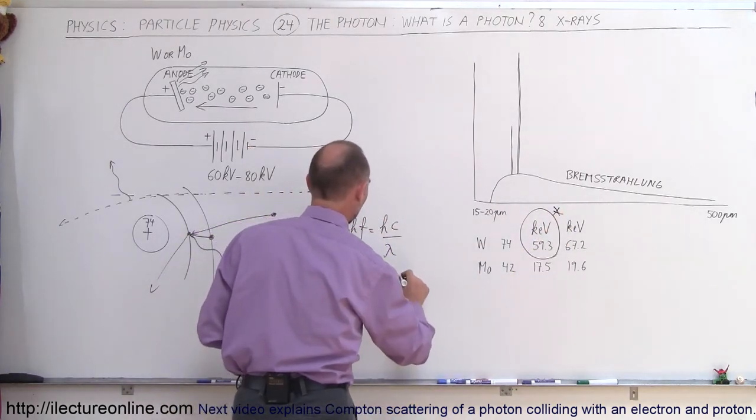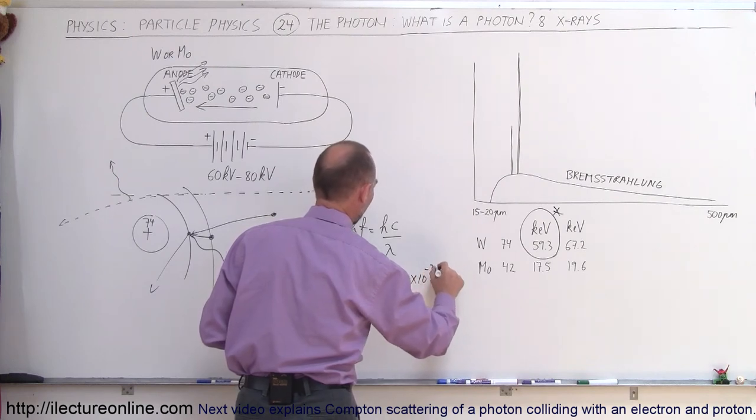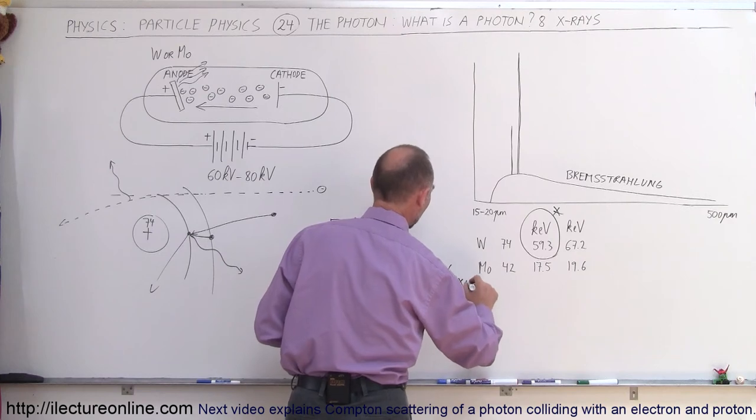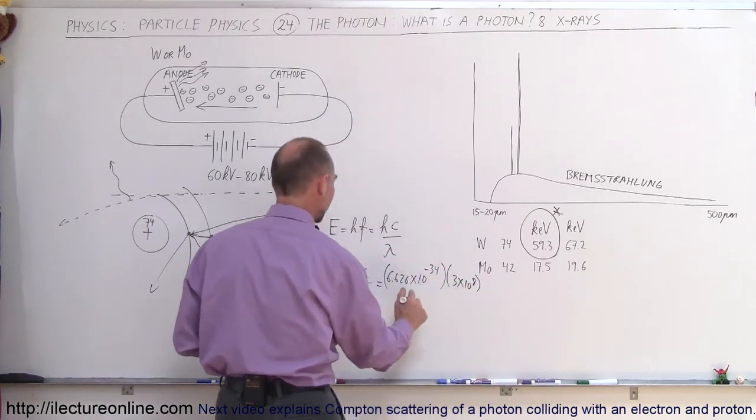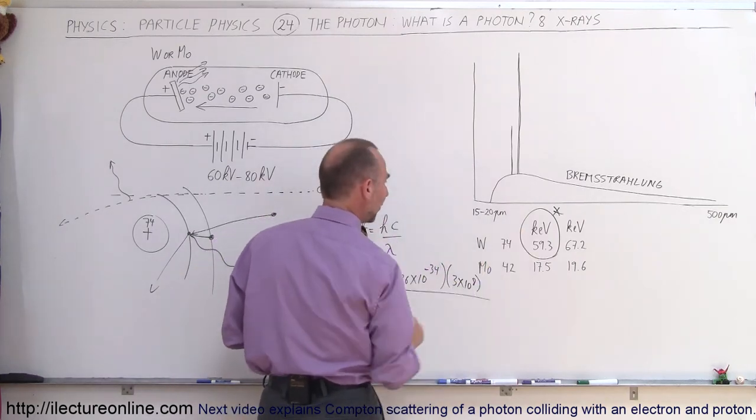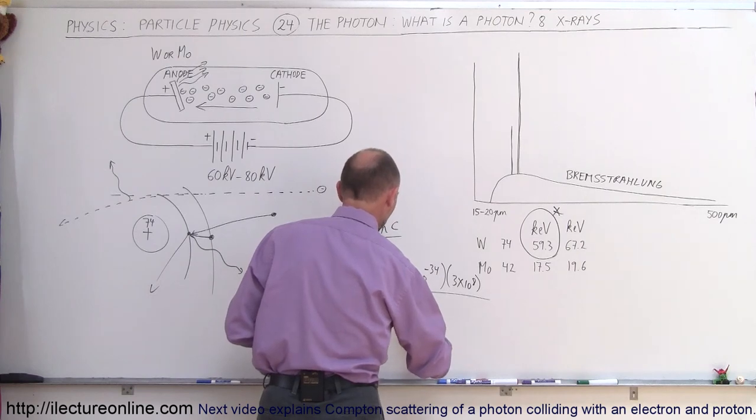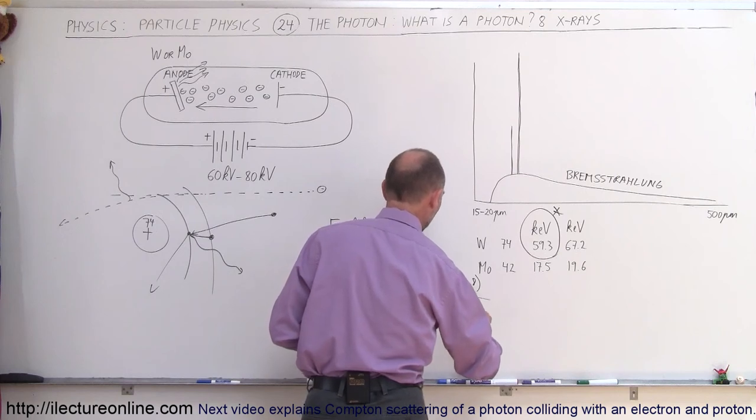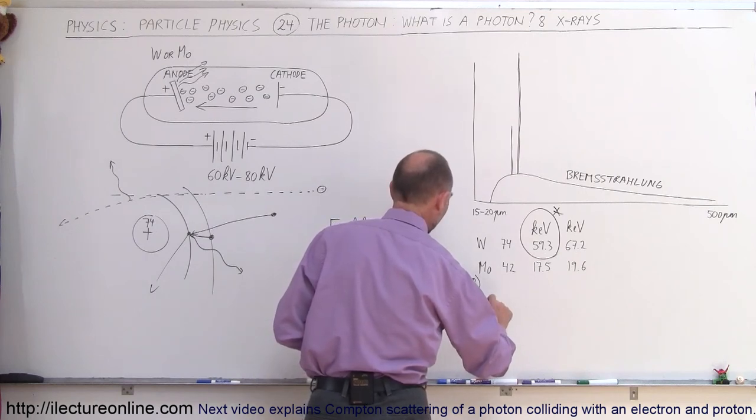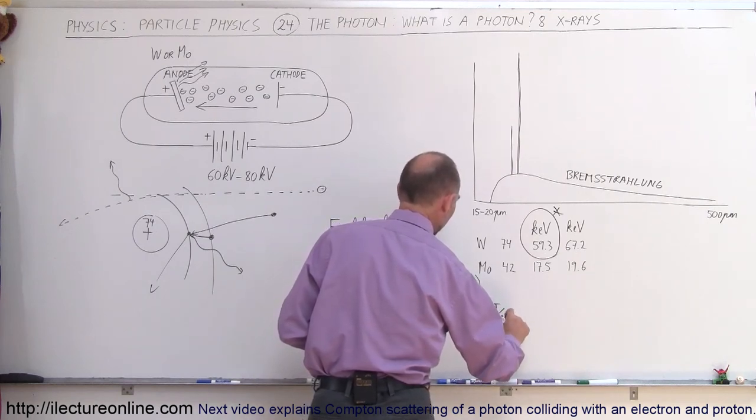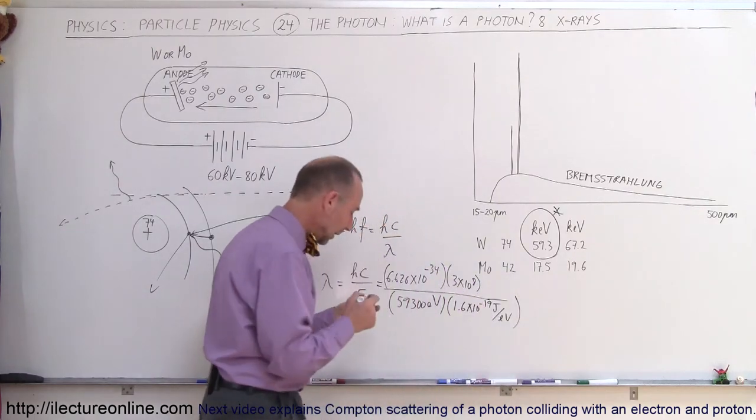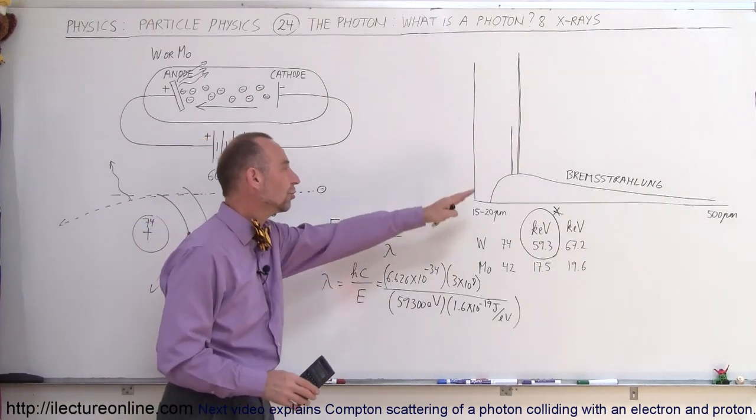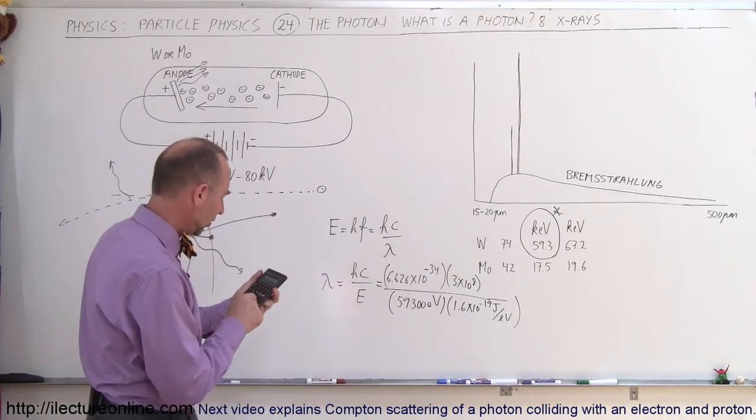All right, so we have 6.626 times 10 to the minus 34 for Planck's constant. That's joules times seconds. Multiply times 3 times 10 to the 8 meters per second for the speed of light, divided by 59,300 electron volts. And, of course, we want to convert that to joules, which is 1.6 times 10 to the minus 19 joules per electron volt. And when we do all that, we get the wavelength of the x-ray radiation that's produced.